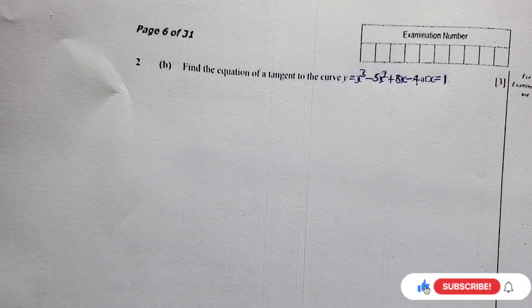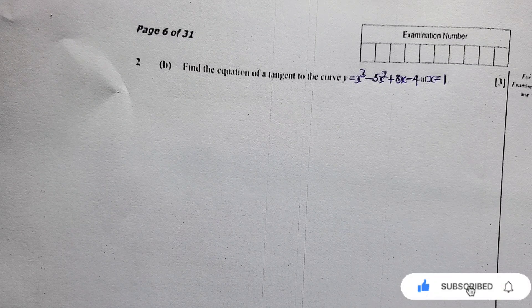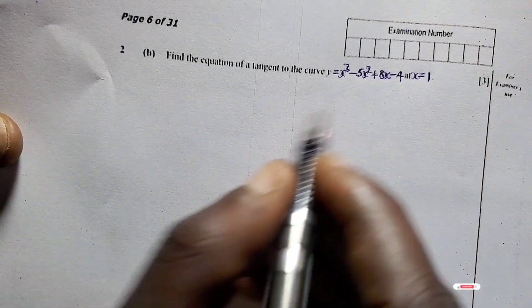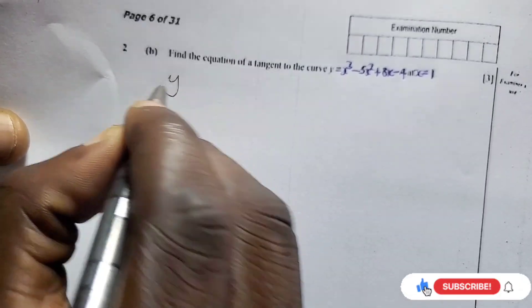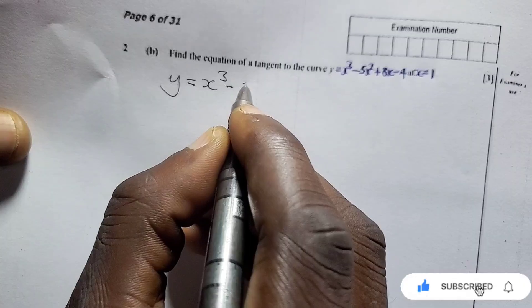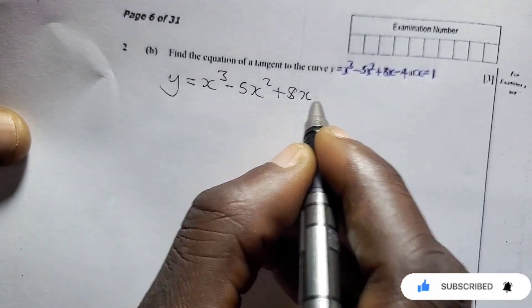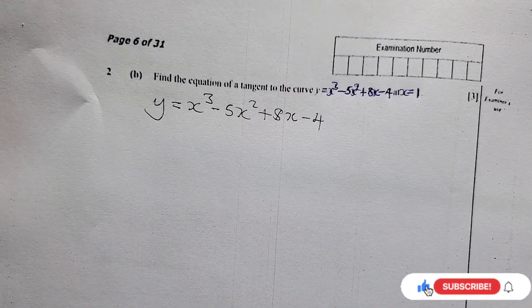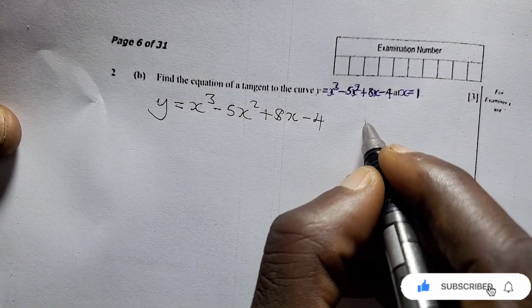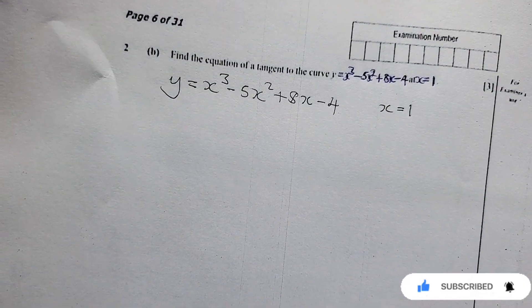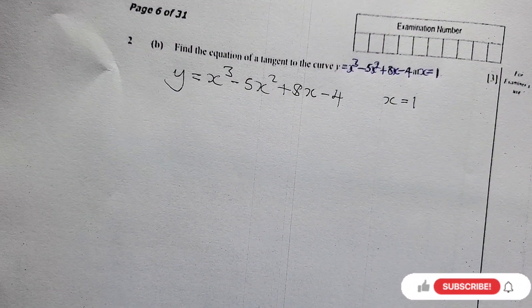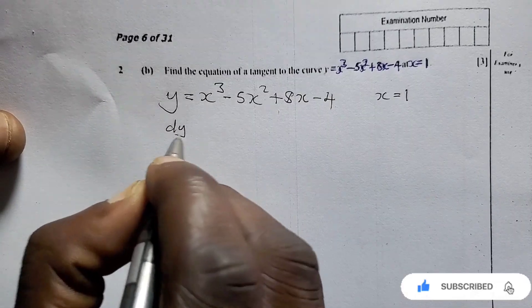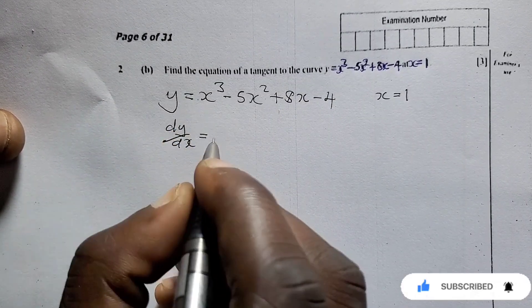Now let's go to Question 2b, which is a calculus question. We are asked to find the equation of the tangent to the curve y equals x cubed minus 5x squared plus 8x minus 4, at the point where x equals 1. This is worth three marks. The first thing we need to do is find dy/dx by differentiating the equation.